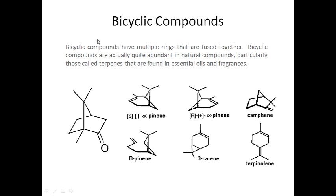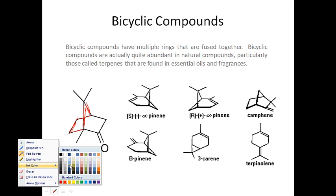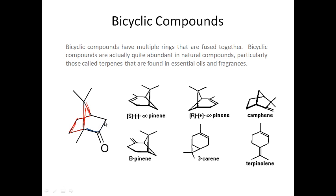In bicyclic compounds, we're going to take some rings and fuse them together. For instance, if you look at this molecule, it actually has two five-membered rings that are fused together. There's the first ring, and then here's the second ring, and they share three carbons in common. So these are two fused five-membered rings. This structure is actually a molecule called camphor.